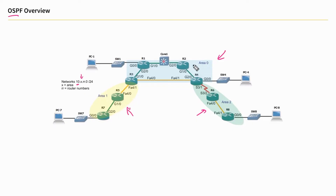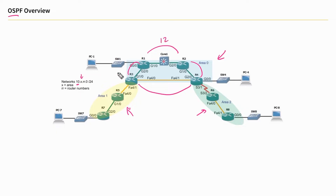Over here in area two, the second octet would be two, and in area zero, a zero. For the links between routers — like between R1 and R2, R3 and R4, R2 and R4, and R1 and R3 — I'm using the two router numbers from lower to higher. So this would be 12 in the third octet, and 13 in the third octet. Between R2 and R4 would be 24, and between R3 and R4 would be 34. That logic continues for all other routers as well.